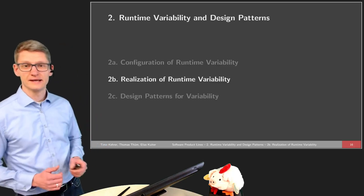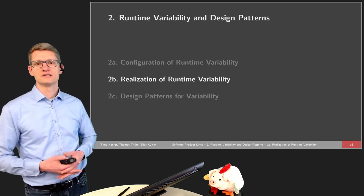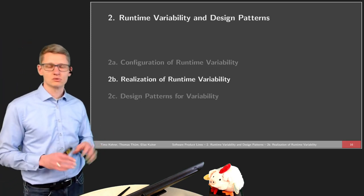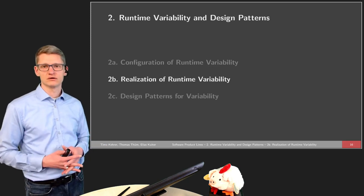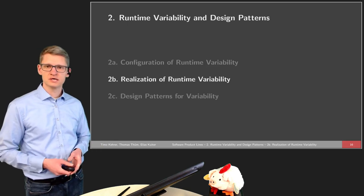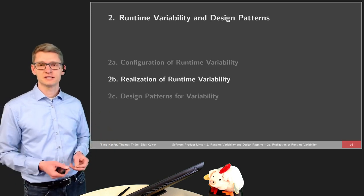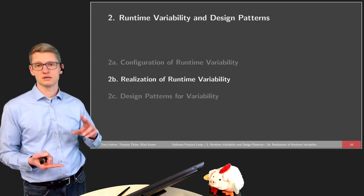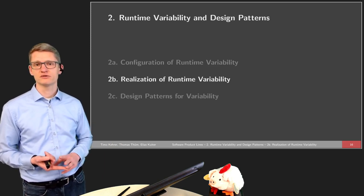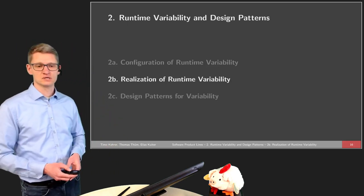In the second part of the lecture, we want to dive into more details of the realization of runtime variability. So how can we realize runtime variability at source code? We'll focus on source code for now, but there will also be later lectures where we look into other artifacts. The question is, now that we have the vision of runtime variability which can be configured by means of different techniques — we talked about command-line parameters, about configuration options in terms of configuration files or preference dialogues — how can this be realized in the source code so that the program actually behaves differently?